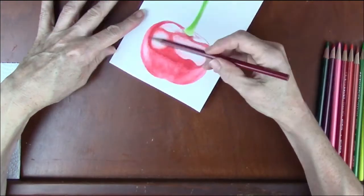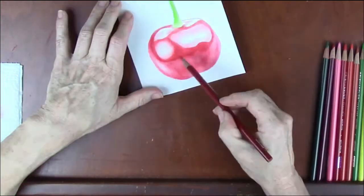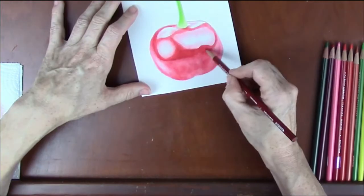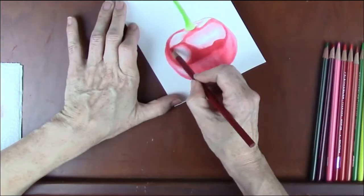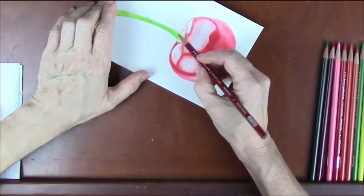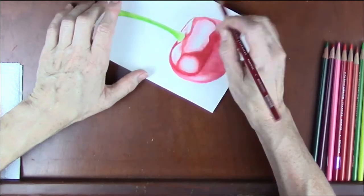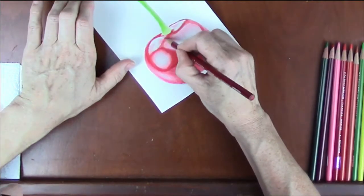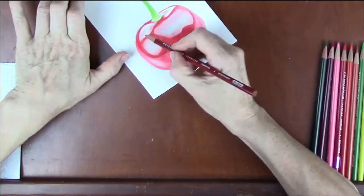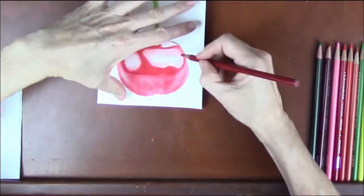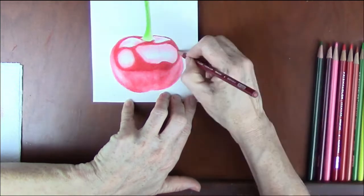When that surface is dry we can go back in with some darker values. Again the same process applies: thin, light layers and a building up of those layers until you achieve enough pigment to use your solvent on top again.